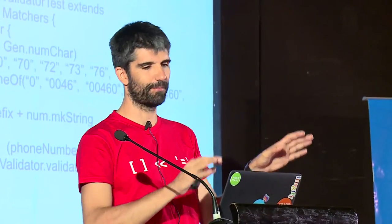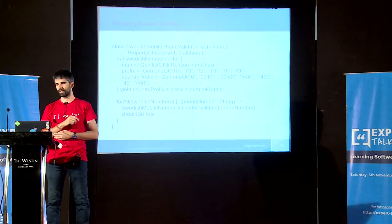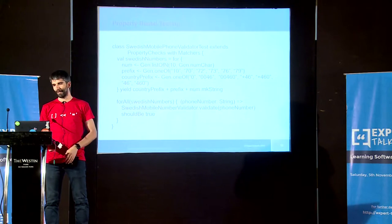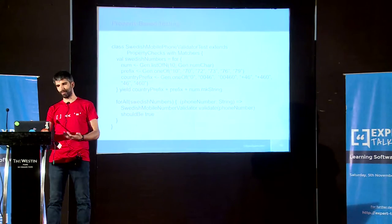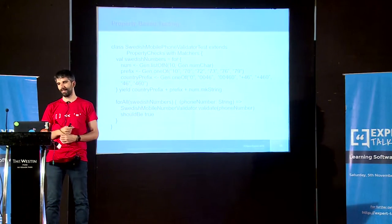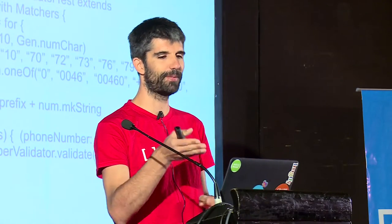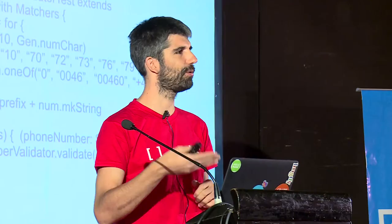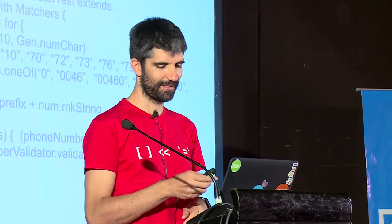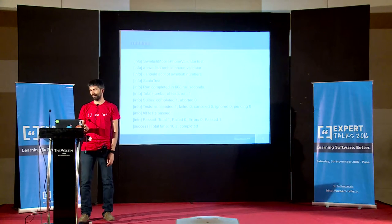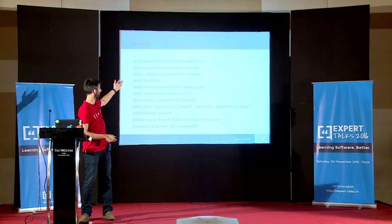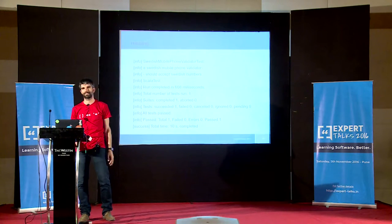Then you get the prefix — 1 or 0 — from all the options, and then you get the country parts. You put all the things together with the yield. Now you have a number, and you supply it to 'forAll'. For all the numbers generated, you pass them to the property and it generates — in this case — a hundred numbers, and tests that they're all valid. If anything is not valid, you get an error. If your implementation is correct, you see something like: ran a number of tests, all tests passed, took 10 seconds.